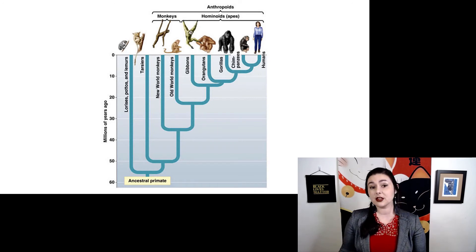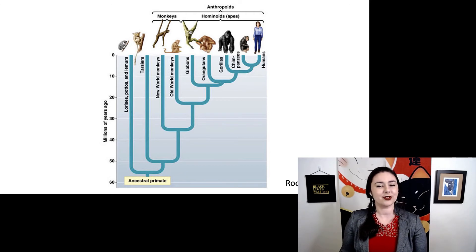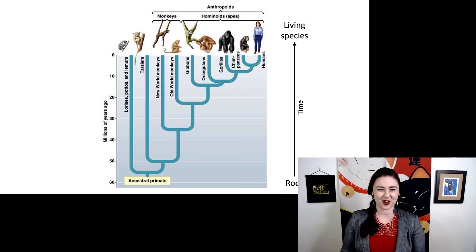You might see people doing it like this, though, where it's a little bit more rectangular. Some people find this a little bit easier to interpret. Again, our root is at the bottom, our living species are at the top, and time flows in this direction.